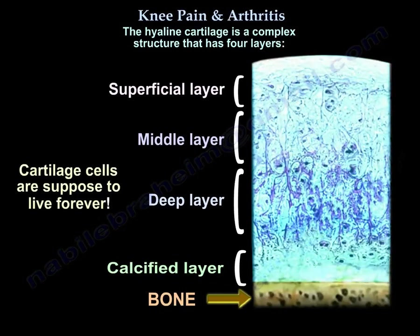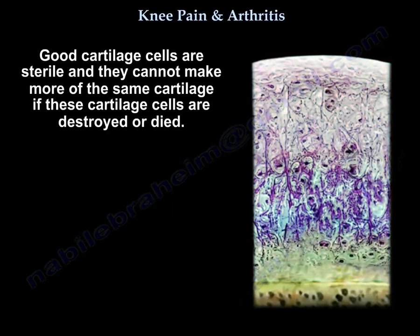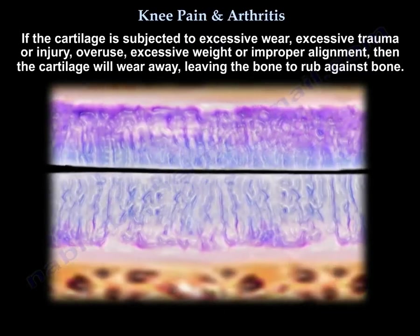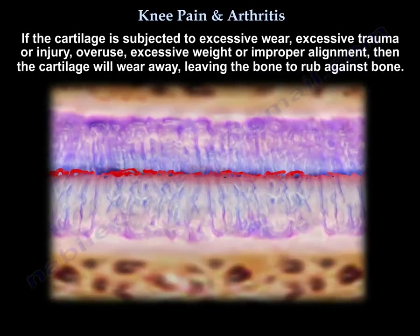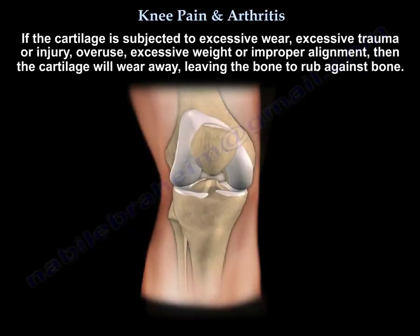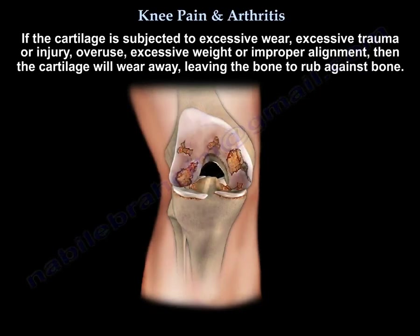Cartilage cells are supposed to live forever. Good cartilage cells are sterile and they cannot make more of the same cartilage if these cartilage cells are destroyed or die. If the cartilage is subjected to excessive wear, excessive trauma or injury, overuse, excessive weight, or improper alignment, then the cartilage will wear away, leaving the bone to rub against the bone.